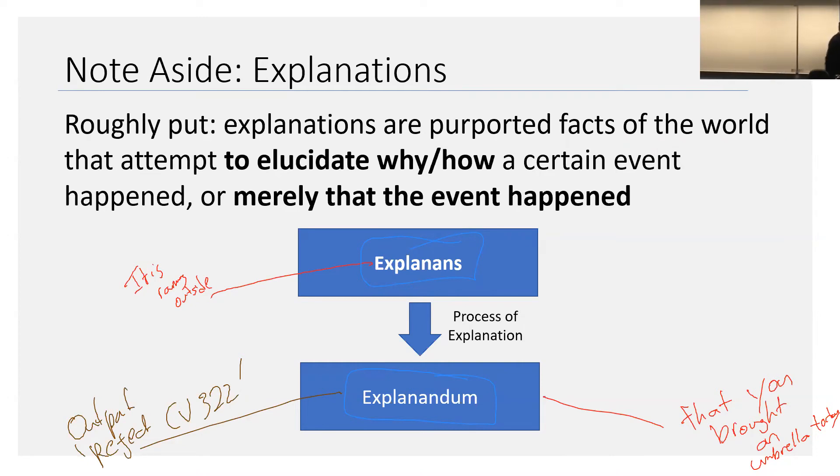For example, if I ask you, why did you bring an umbrella today? You said, oh, because I had breakfast at McDonald's. Well, we would think that's a bad explanation or insufficient explanation or irrelevant. Now, in the context of AI, one might ask, okay, what makes it a sufficient, relevant, or good explanation?